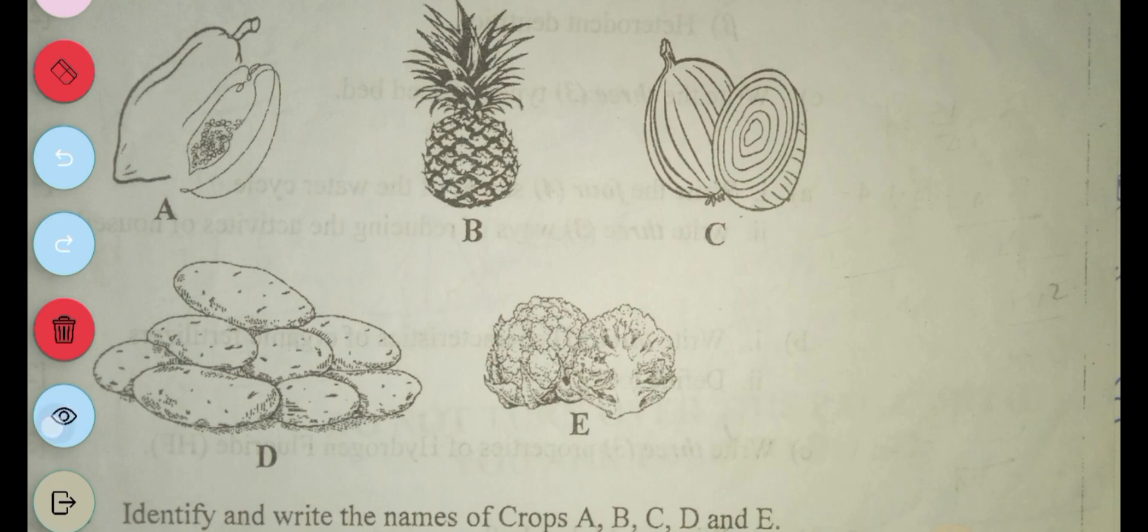So A is purple, B is pineapple, C is onion, D is potato.